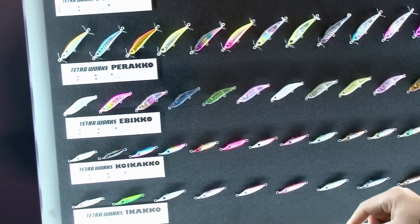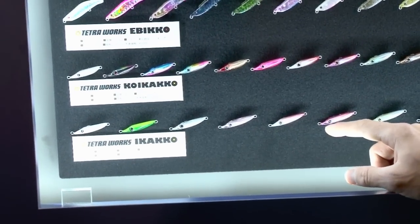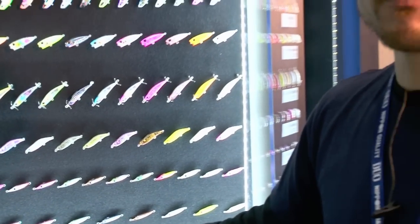Here we have the Ebiko and the Koikankko and Ikako. These two are kind of like jigs, they've been very popular for bottom fishing overseas and domestically as well.